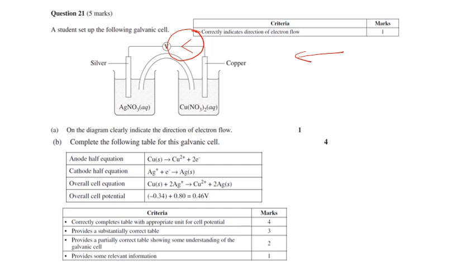It did say that you needed to indicate the direction of the electron flow on the diagram. If you did not put it on the diagram, you were wrong.